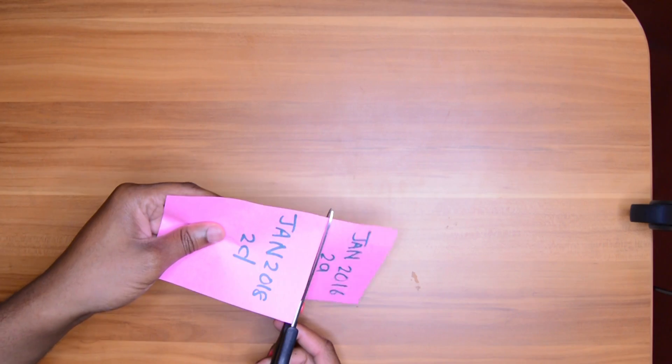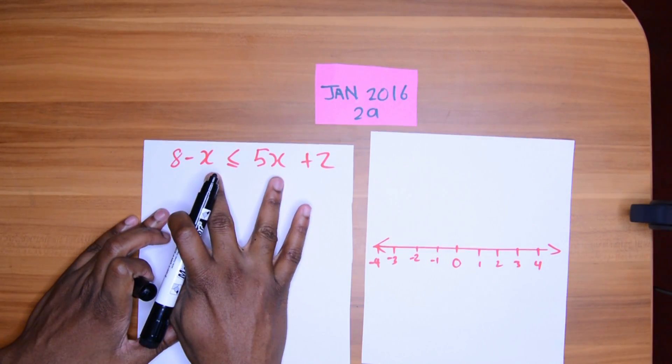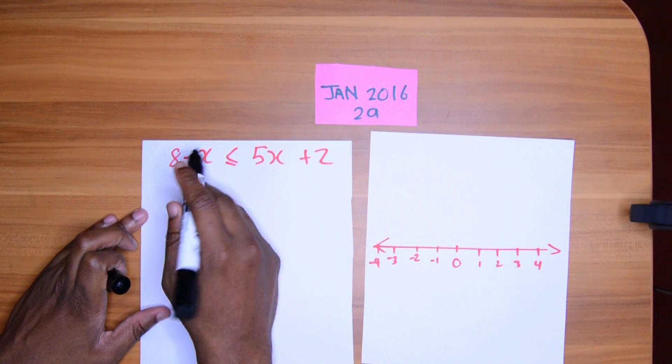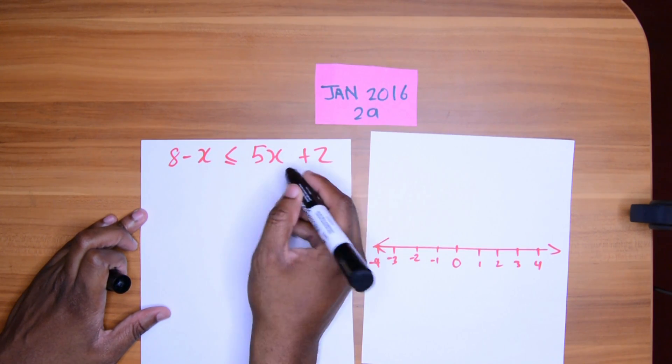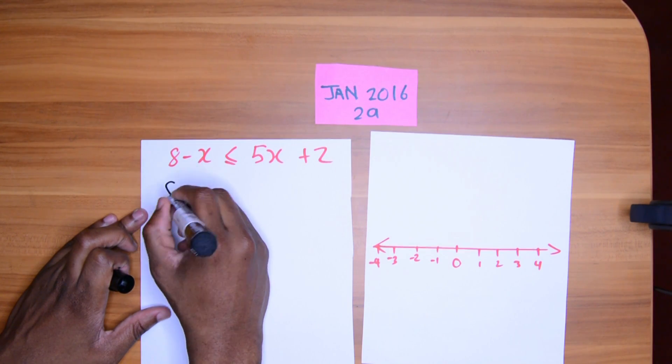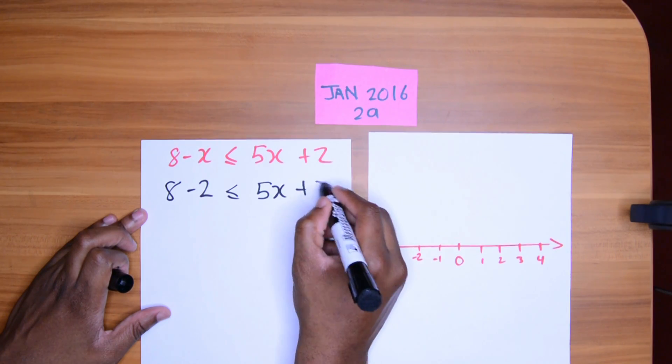Let's do another question. So in this one we have a similar setup. 8 minus x less than 5x plus 12. Let's bring the x's on one side and the numbers on one side. 8 negative 2. Bring it across. 5x plus x.